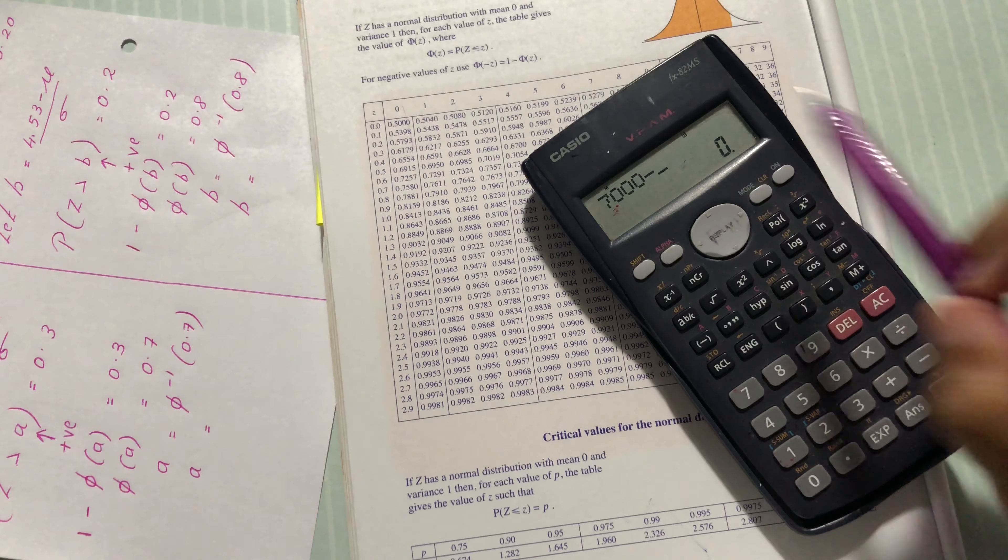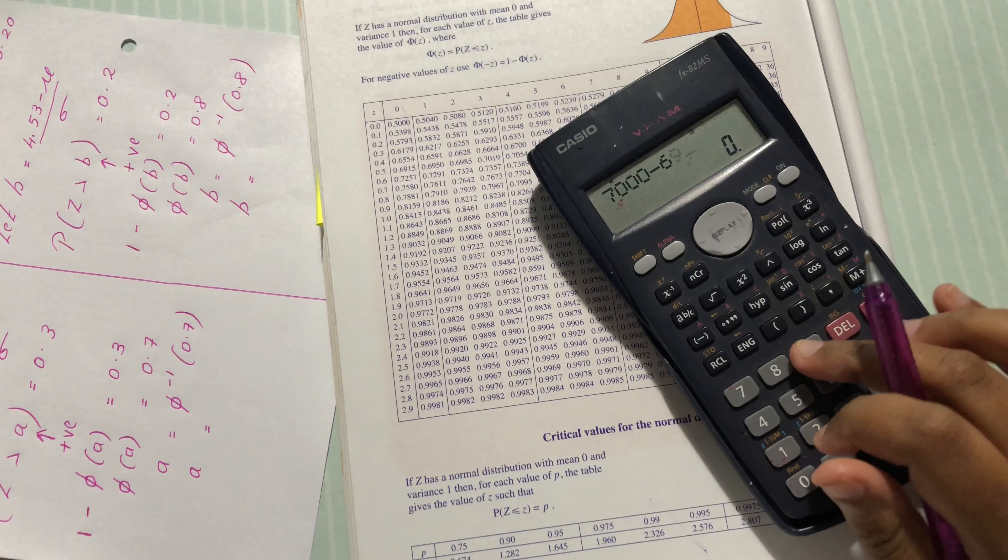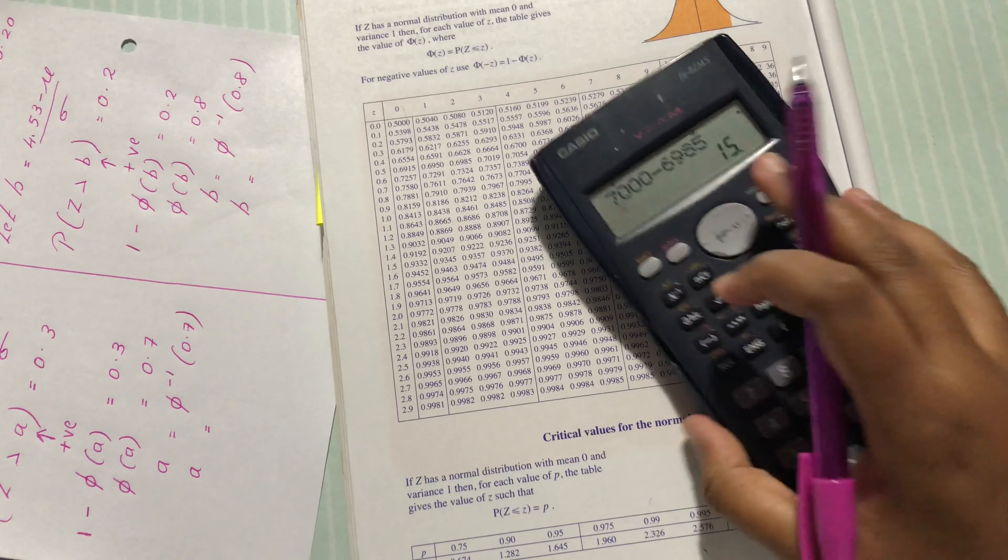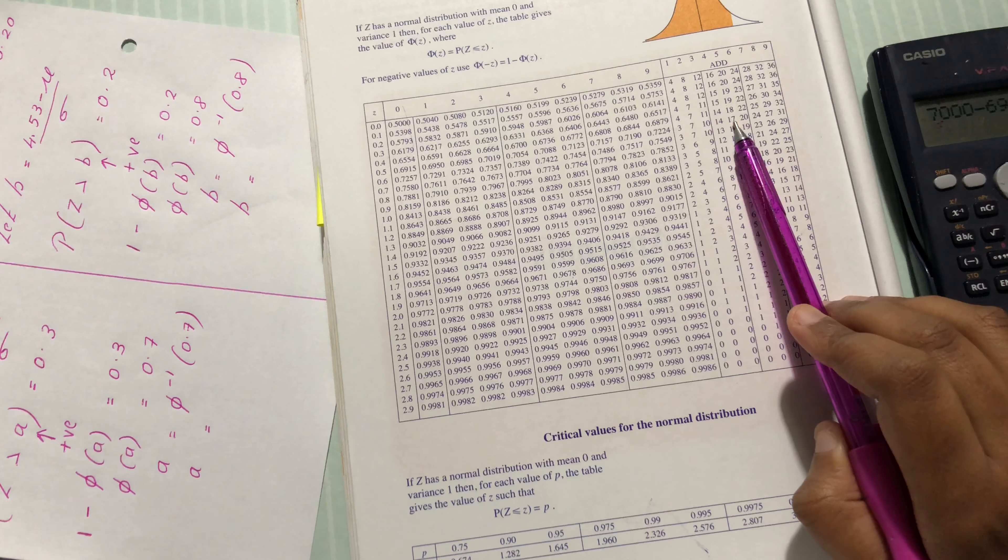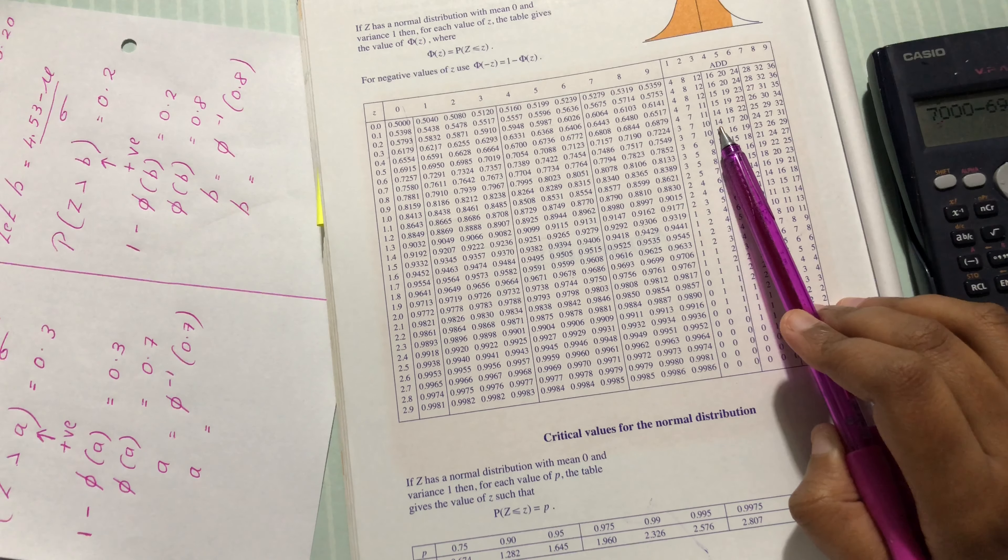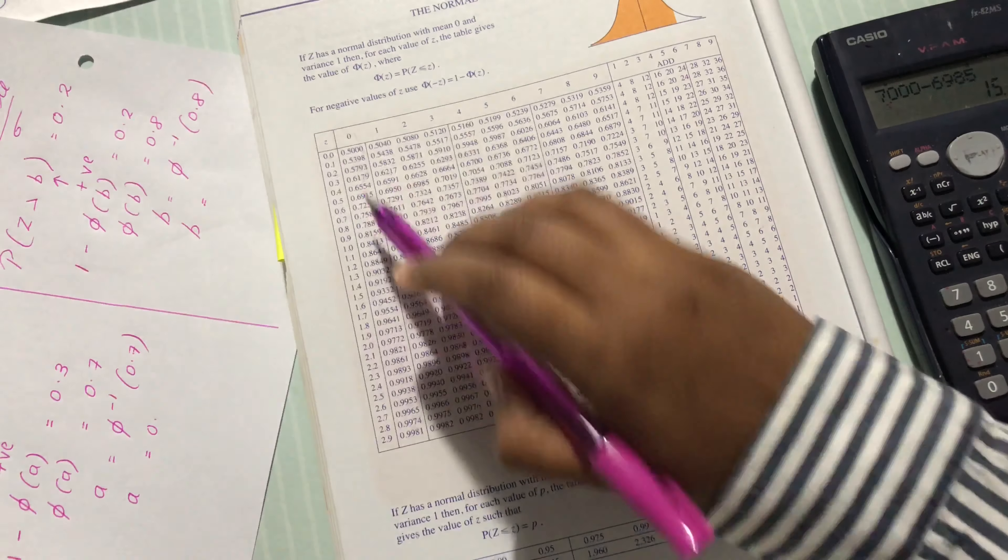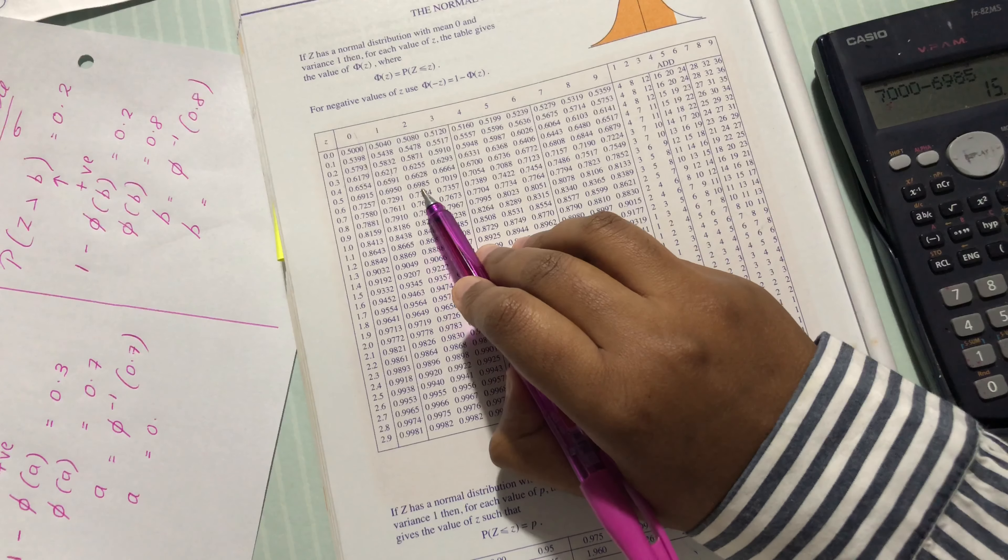0.6985... we have 15 and 4. We don't take above 15, we take below 15, which is 14. So we have 0.524.